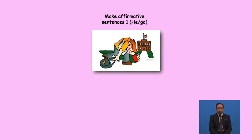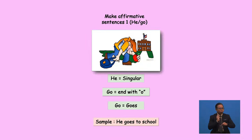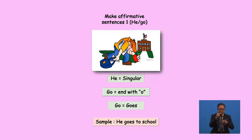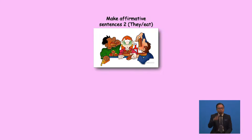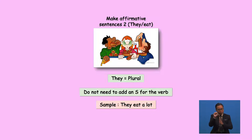Look at the first picture. The word given is 'go' and there is only one person. So we need to add S. He is a singular noun and the verb 'go' ends with O. So for singular noun, we add ES, making it 'goes'. Look at the second picture. The word given is 'eat' and there are three people. They is a plural noun, so we do not add S — just keep the base word 'eat'.